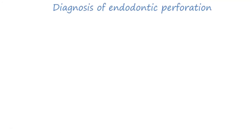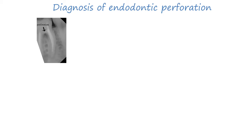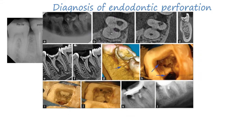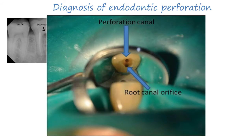Perforation can be diagnosed by periapical radiograph or cone beam CT, which also provides the precise site and location of the perforation. Clinical inspection is also used — magnification is of great importance in inspecting perforations in the pulpal floor and sometimes the canal itself.